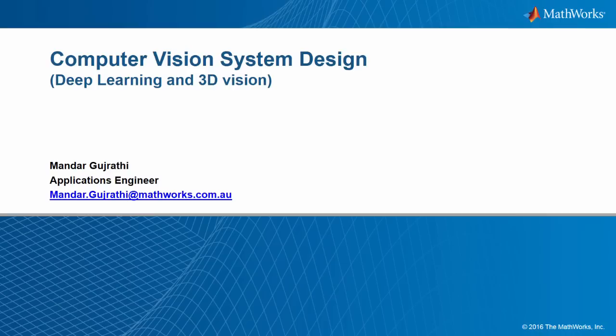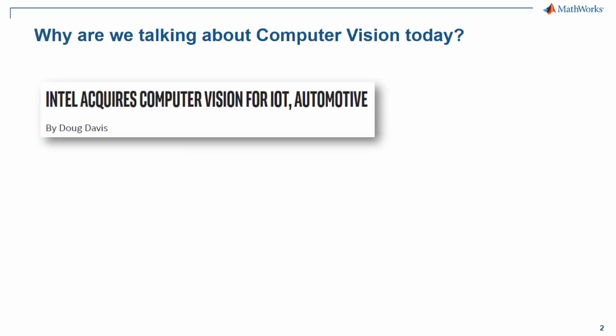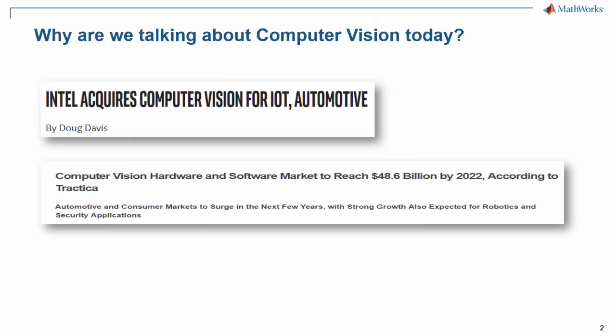Before we jump into the specifics of this talk, let's try to understand why computer vision is so important today. Before the start of this conference, I did some searches on the internet to understand how the computer vision market is progressing. I found links related to Intel acquiring computer vision market for IoT and automotive, and predicting how the computer vision market is going to grow — it's going to reach 50 billion by 2022 or so.